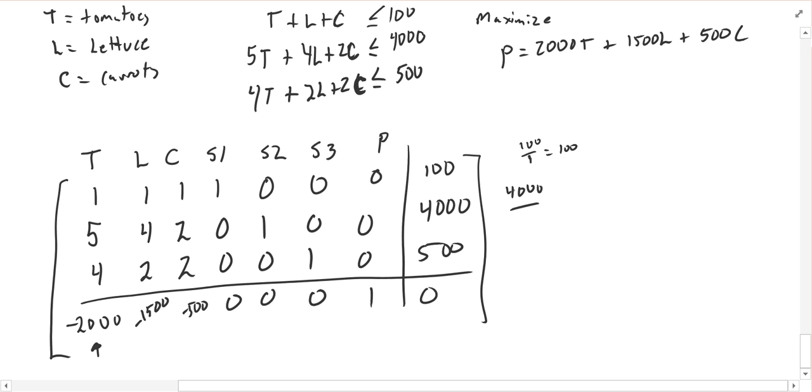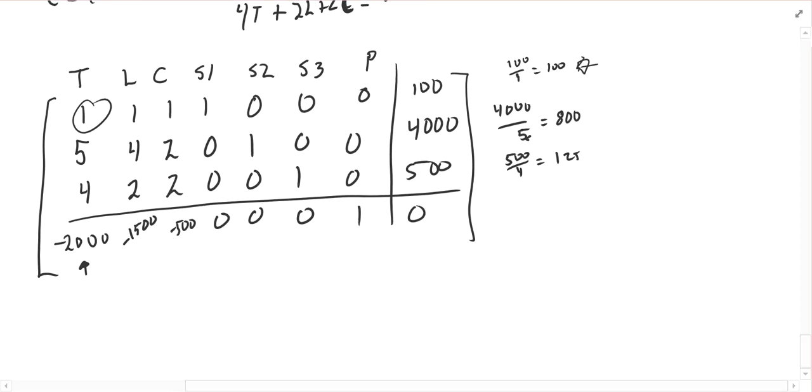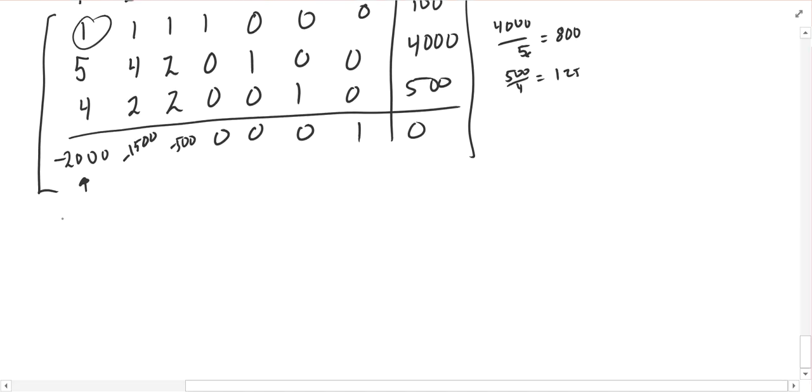Sorry, I've got to divide to decide which row I want to work with. And 4,000 divided by 5 is, is that 800? I think that's 800. Yep, that's 800. And 500 divided by 4 is 125. And so my pivot row is going to be the first row that has the smallest result there. And so I want to use that 1 as my first pivot. I want to leave that first row the same.